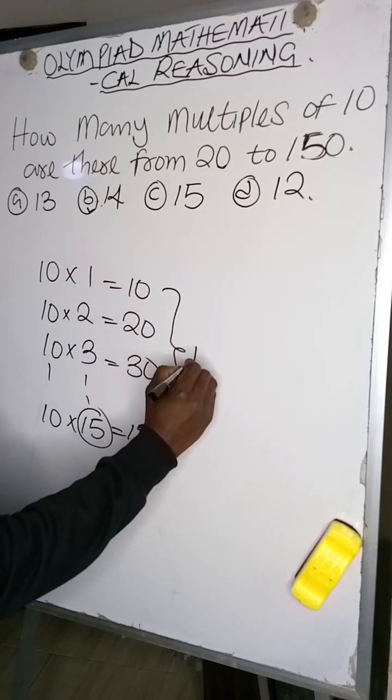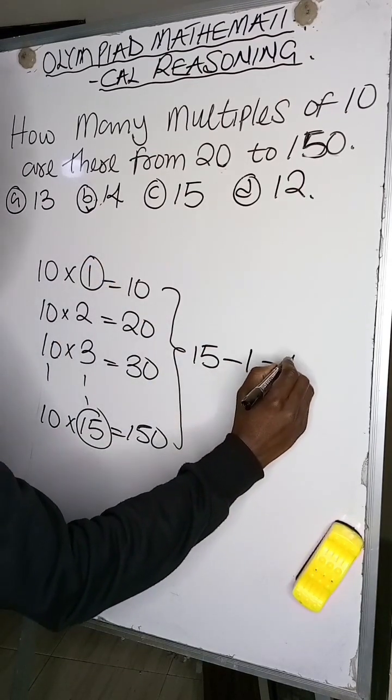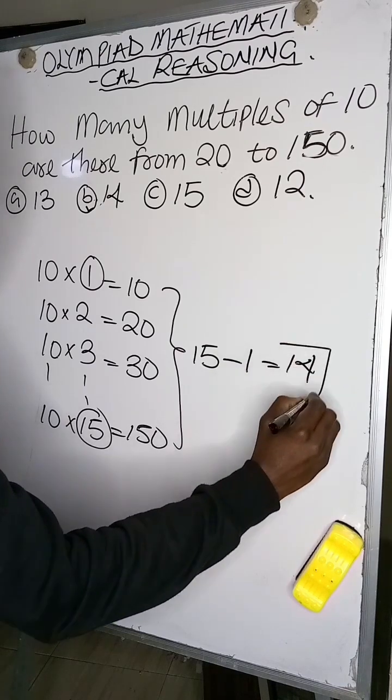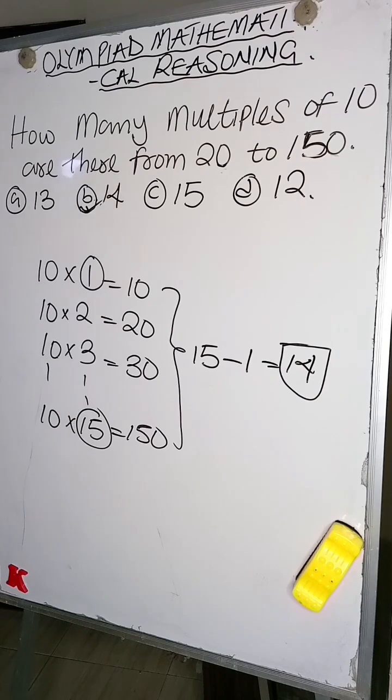minus 1 will be equal to 14, the number in between those numbers. So the result is 14 multiples of 10.